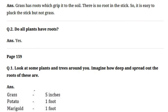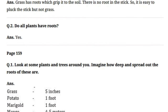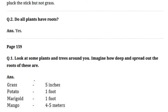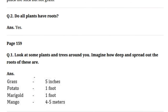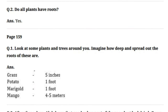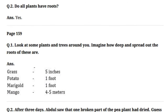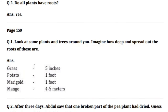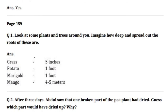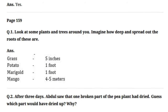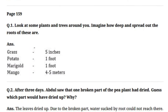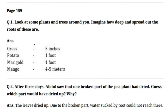After three days, Abdul saw that one broken part of the pea plant had died. Guess which part would have died and why? Answer: the leaves dried up because the broken part of the pea plant meant water sucked by the root could not reach there.